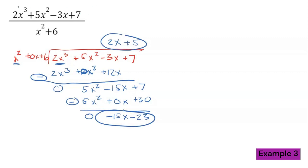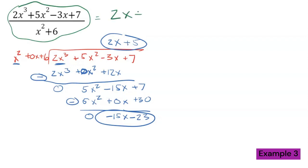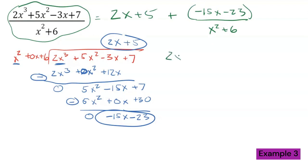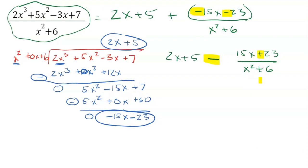My remainder is -15x - 23 and my quotient is 2x + 5. So the final answer is 2x + 5 + (-15x - 23)/(x² + 6). I could also factor out the negative to write it as 2x + 5 - (15x + 23)/(x² + 6) — just a different form you might see in a multiple choice question.